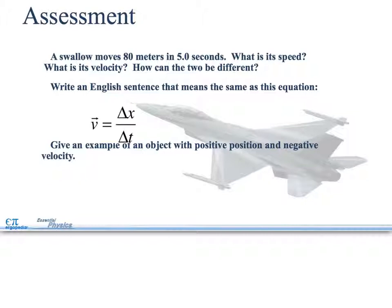Our assessments: A swallow moves 80 meters in 5 seconds. What is its speed? What is its velocity? How can the two be different? Write an English sentence that means the same as this equation. So we have velocity equals displacement divided by time. Give an example of an object with positive position and negative velocity.